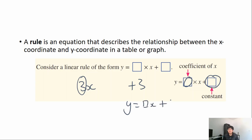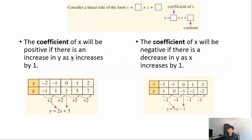The coefficient of x — the number in front of x — will be positive if there is an increase in y as x increases by one. Have a look at this table: as x increases by one, y is also increasing — in this case going up by two — so the coefficient of x will be positive. However, the coefficient of x will be negative if there is a decrease in y as x increases by one.